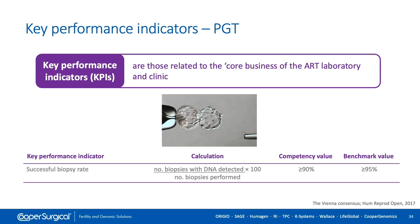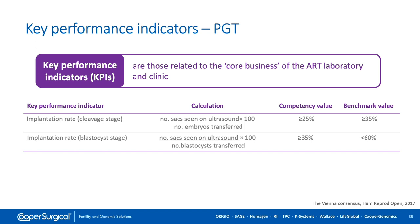Two very important KPIs are the implantation rate — the final check of quality — defined as the number of sacs seen on ultrasound linked to the number of embryos transferred. Competency and benchmark values are listed, but you must evaluate against your own specific reference population. Compare apples with apples and not apples with pears — this is essential for an objective evaluation of quality.